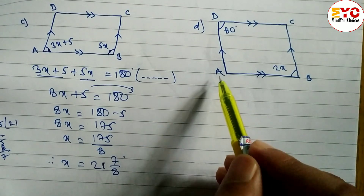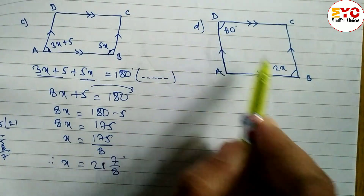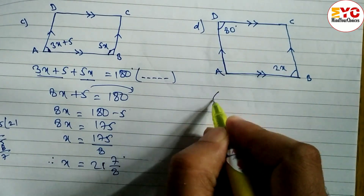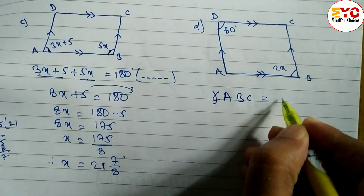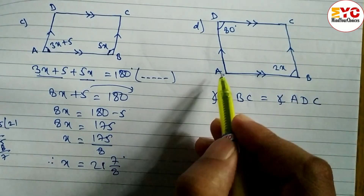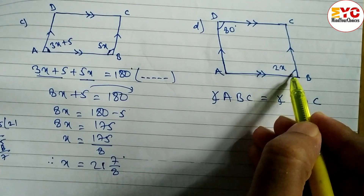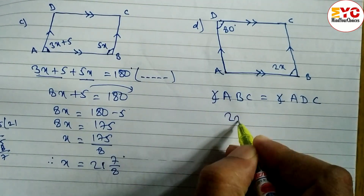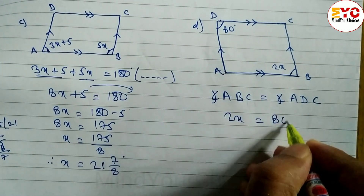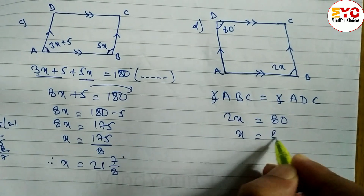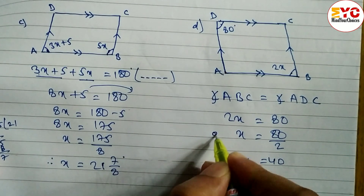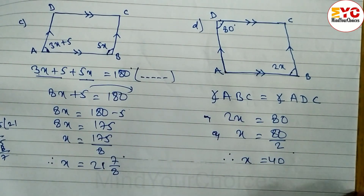Now look at question number d. You can see here ABCD is a parallelogram. Parallelogram means opposite angles are equal. An angle is given so we can write angle ABC is equal to angle ADC, because opposite angles of a parallelogram are equal. ABC is equal to 2x and ADC is equal to 80, so 2x equals 80. We divide 80 by 2 and therefore the value of x is equal to 40 degrees.